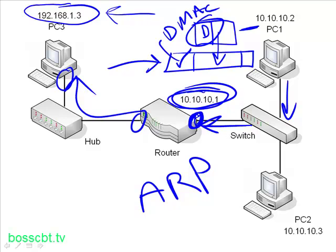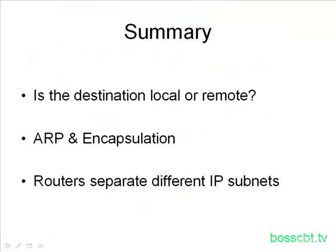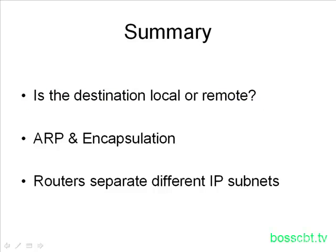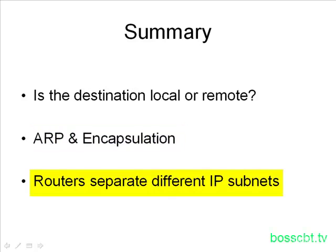That is the process of using the default gateway when routing to a different IP subnet. To summarize: the question a computer asks itself is whether the destination is local or remote — in the same IP subnet or not. Based on the answer, it will either use a default gateway or not. To complete the routing process, the computer uses the ARP process and encapsulation to create a frame and put it on the Ethernet segment. A router is needed for different IP subnets, which explains why a router's interface in a particular segment is used as the default gateway — it is the door to other network segments and IP subnets.